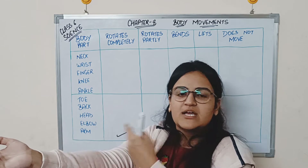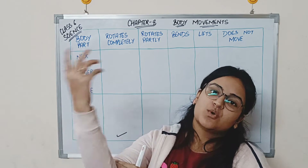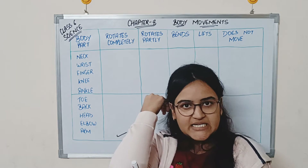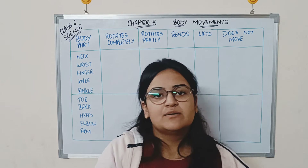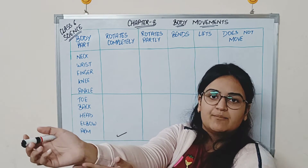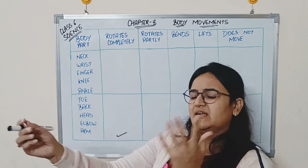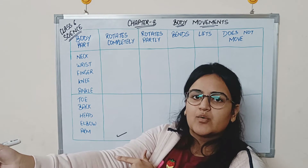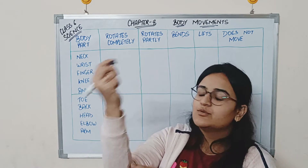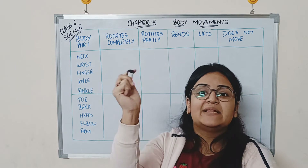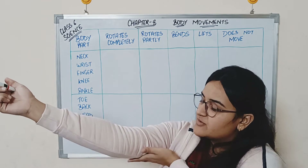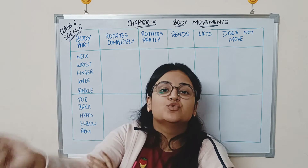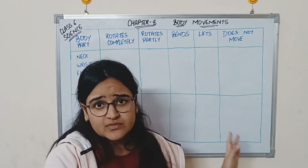Now put your arm forward and try to touch your shoulder with your hand — it's very easy. This is because of the elbow joint. Now for Activity 1: imagine you keep a straight hard piece of material and tie it along your arm. You won't be able to touch your shoulder with your hand because the hard part won't let your elbow move.